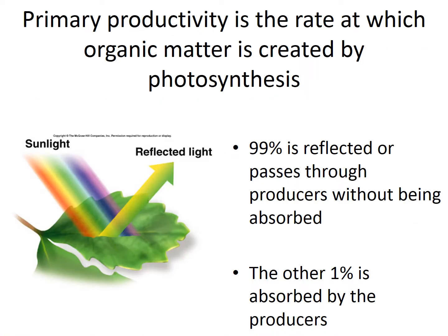Primary productivity is the rate at which organic matter is created by photosynthesis. In fact, 99% of light is actually reflected or passes through producers without being absorbed, and that other 1% is what is absorbed by the producers and goes to photosynthesis.